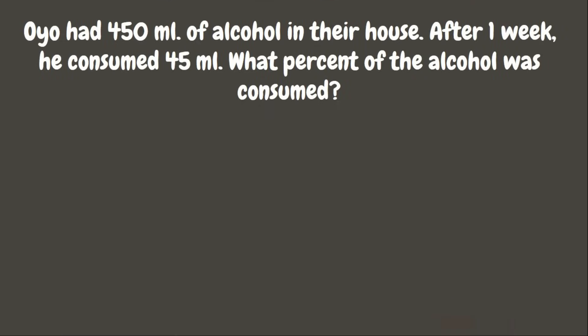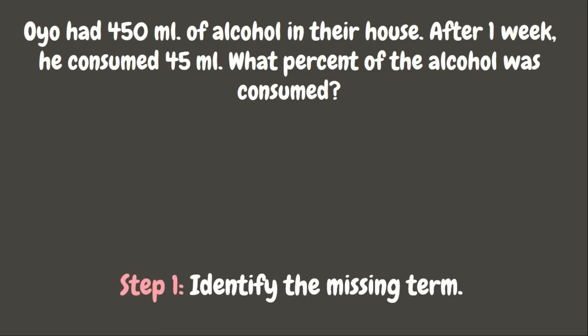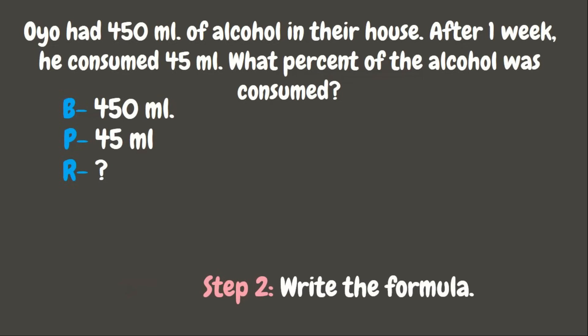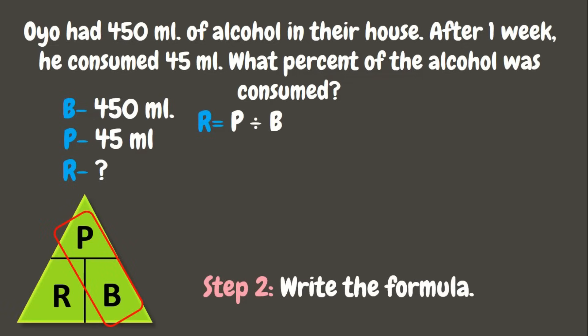Wonderful. Now let's try this problem. Oyo had 450 ml of alcohol in his house. After a week, he consumed 45 ml. Now what percent of the alcohol was consumed? The first thing to do is identify the missing term. The 450 ml is the entire amount, so that is our base. While 45 ml is the amount consumed, which is part or portion of the entire amount — that means that is the percentage. Since we are looking for the percent, which is the rate, that is the missing term. To get the rate, our formula is P divided by B, which is 45 divided by 450.